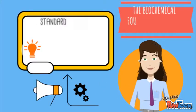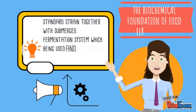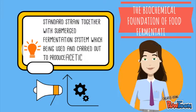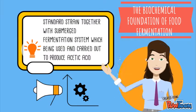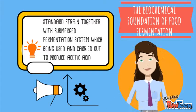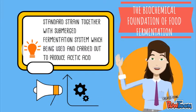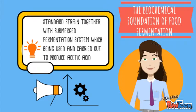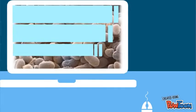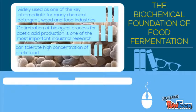Now let's go to the biochemical foundation of food fermentation. Acetobacter aceti has been the center strain used in a submerged fermentation system to produce acetic acid, which is one of the important weak acids with a long history in chemical industries. It is widely used as one of the key intermediates in many chemical and food industries.